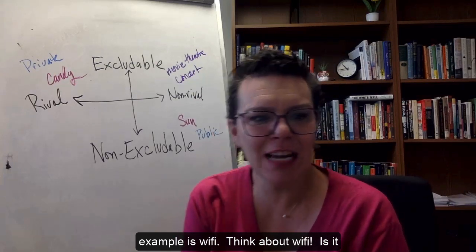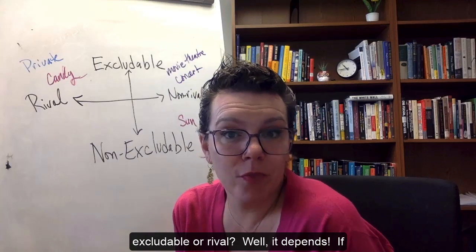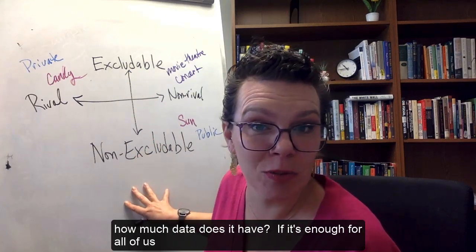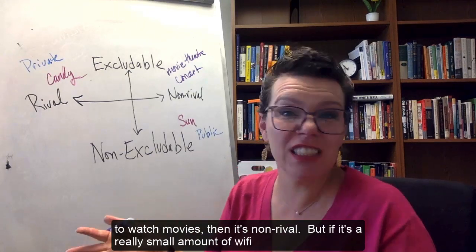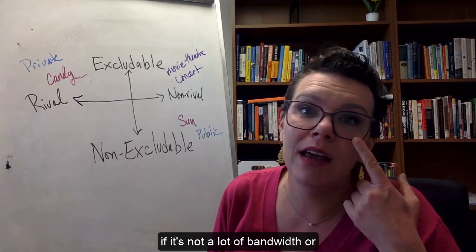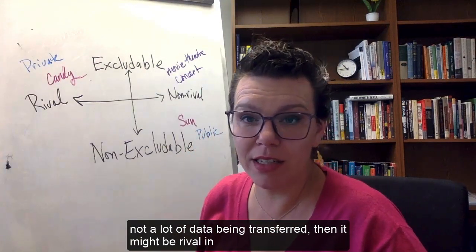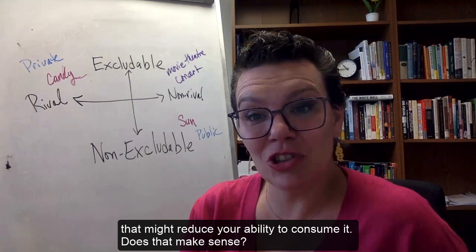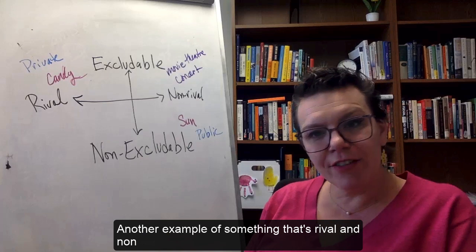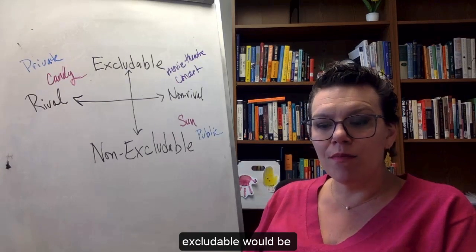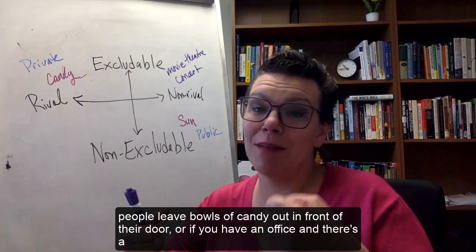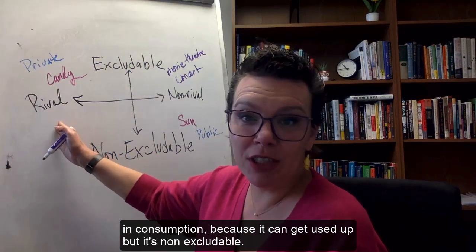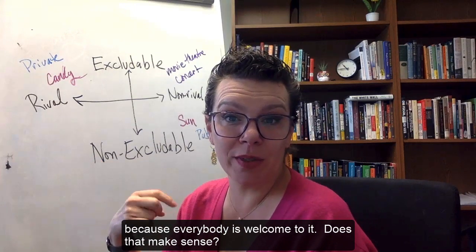Another great example is Wi-Fi. Is it excludable or rival? Well, it depends. If it's password protected, it's excludable. If it's not password protected, then it's non-excludable. How much data does it have? If it's enough for all of us to watch movies, then it's non-rival. But if it's a really small amount of Wi-Fi — not a lot of data being transferred — then it might be rival in consumption. If I decide to upload a video or stream something, that might reduce your ability to consume it. Another example of something that's rival and non-excludable would be Halloween candy. If people leave bowls of candy out in front of their door, that's rival in consumption because it can get used up, but it's non-excludable because everybody's welcome to it.